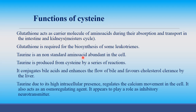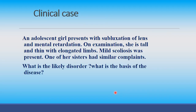Taurine is a non-standard amino acid abundant in cells. It is produced from cysteine by a series of reactions. It conjugates bile acids and enhances the flow of bile, favoring cholesterol clearance by the liver. Due to its high intracellular presence, taurine regulates calcium movement in the cell. It also acts as an osmoregulating agent and appears to play a role as an inhibitory neurotransmitter.